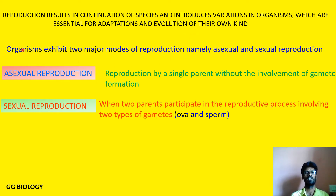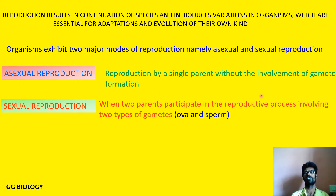In organisms we have two modes of reproduction: the asexual method of reproduction and the sexual type of reproduction. Asexual reproduction is reproduction by only a single parent. It needs only one parent, whereby the parental cell divides into two or many daughter cells. The type of reproduction where sexes are not involved, and there is no production of gametes, is called asexual reproduction.